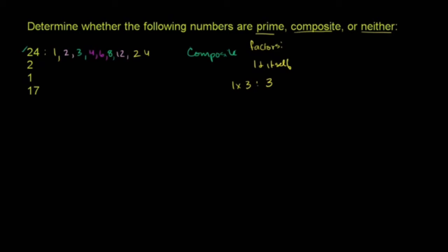Now let's think about 2. Well, the non-zero whole numbers that are divisible into 2—1 times 2 definitely works, 1 and 2. But there really aren't any others that are divisible into 2. So it only has 2 factors: 1 and itself. That's the definition of a prime number. So 2 is prime.